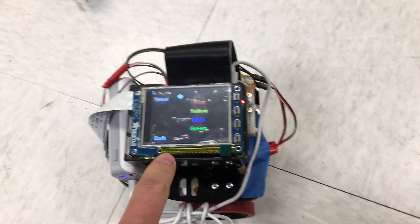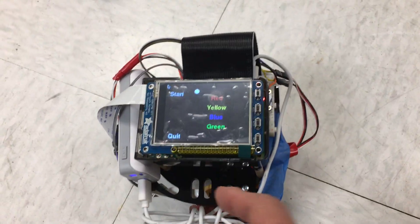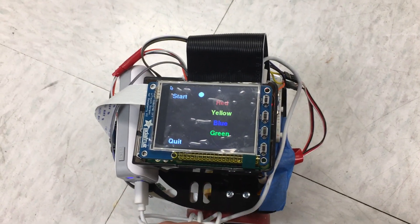So Weiran is going to show us how to use the user interface. Okay, so as we can see we have a user interface with four colors displayed on the screen.